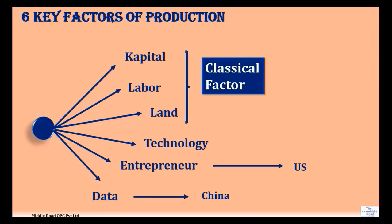When you're talking about capital, you're actually not exactly talking about money, but the machinery, plant, and equipment that leads to productivity or production of goods and services. You could say that money is an enabler. Labor is another classical factor — these were defined at the time of the industrial revolution.